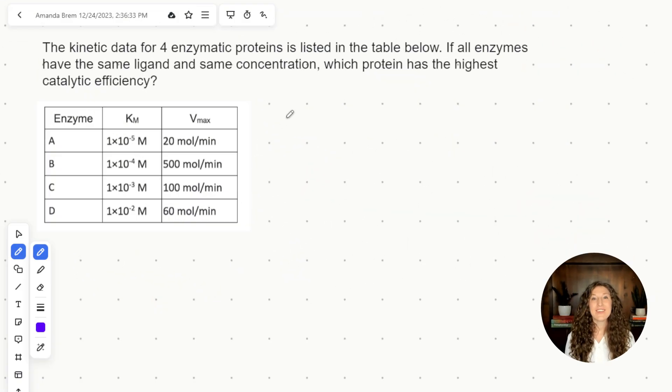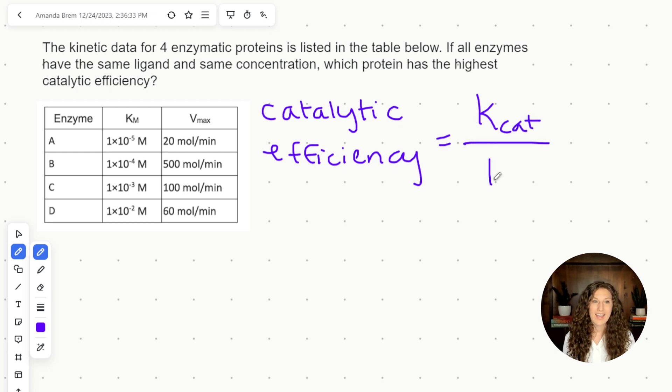The first thing we need to determine is what is catalytic efficiency? The calculation for it is Kcat over Km. So we have Km, but we do not have Kcat in this table. Instead, we have Vmax, which is typical. Vmax and Km are what we usually determine from our Michaelis-Menten enzymatic data. So now we need to think about what is Kcat.